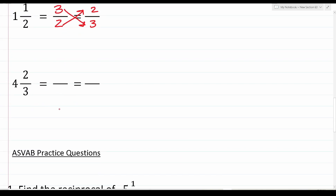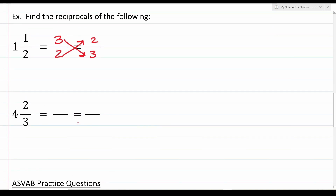Let's do another example with the mixed number four and two thirds. We keep the denominator the same — so that's three — and to find the numerator we do four times three, which is 12, plus two, which is 14. So four and two thirds written as an improper fraction is 14 over three. Now to find the reciprocal, we take the three and move it up, and the 14 moves down. So the reciprocal of four and two thirds is three over 14.